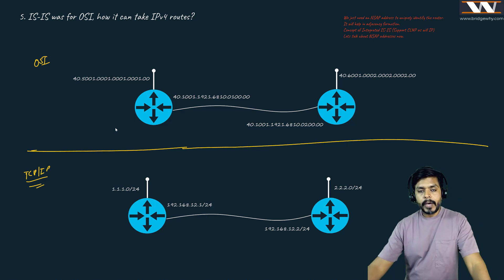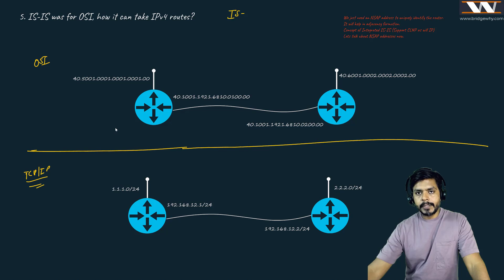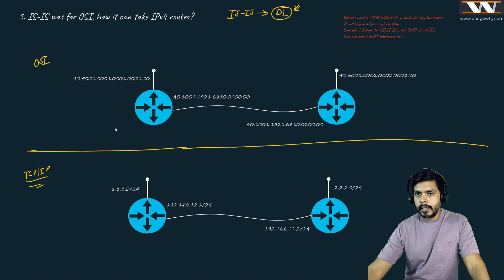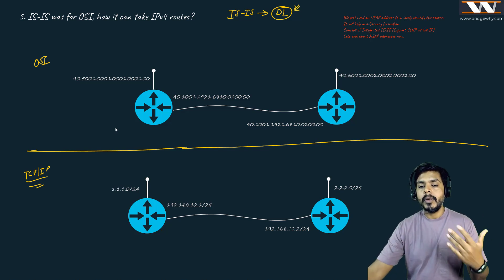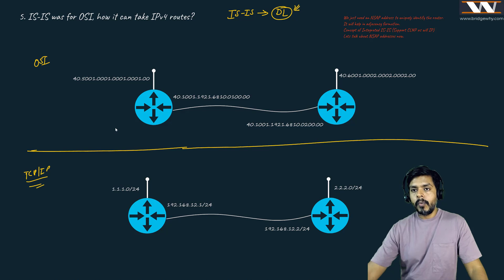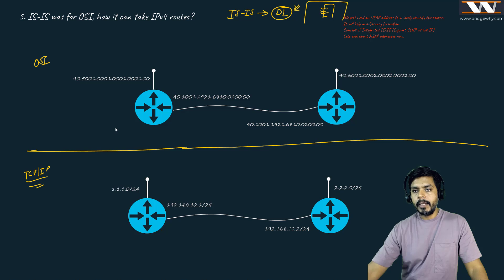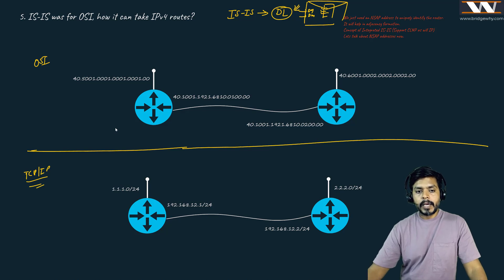First things first - as I mentioned in the last class, ISIS works directly on top of the data link layer. It doesn't work on top of a Layer 3 protocol; it works directly on top of the data link layer. This means whatever message the ISIS protocol creates can be encapsulated directly into the data link layer using source MAC and destination MAC.